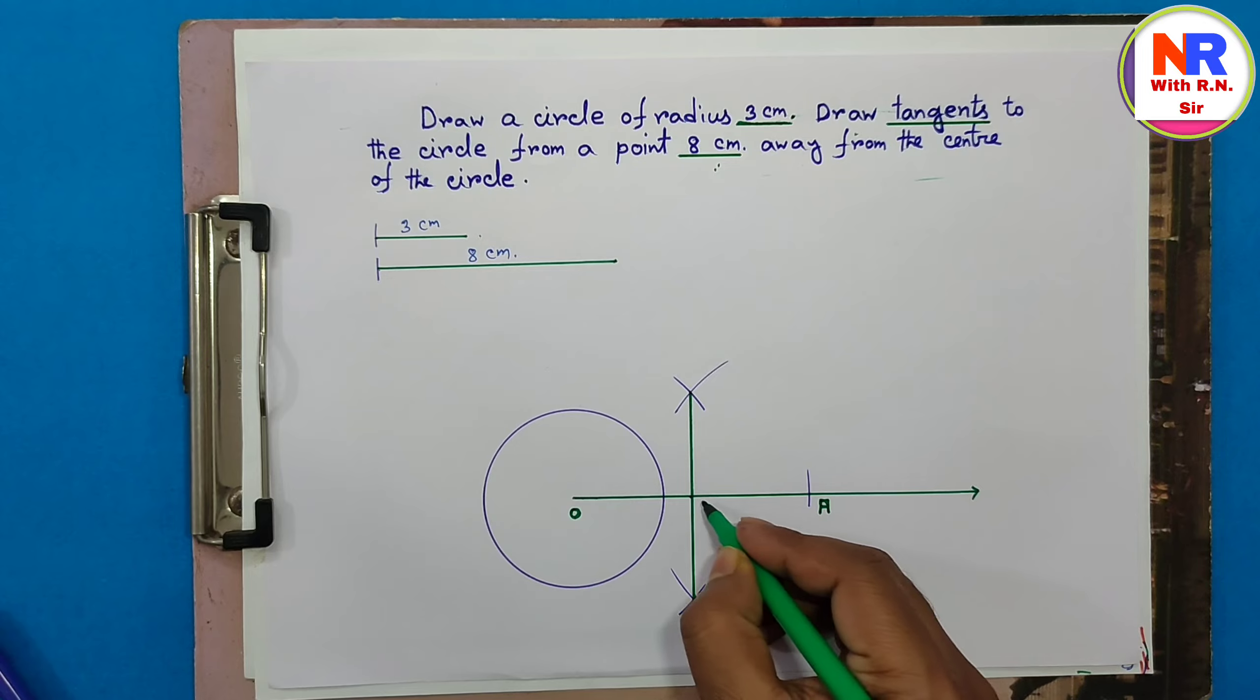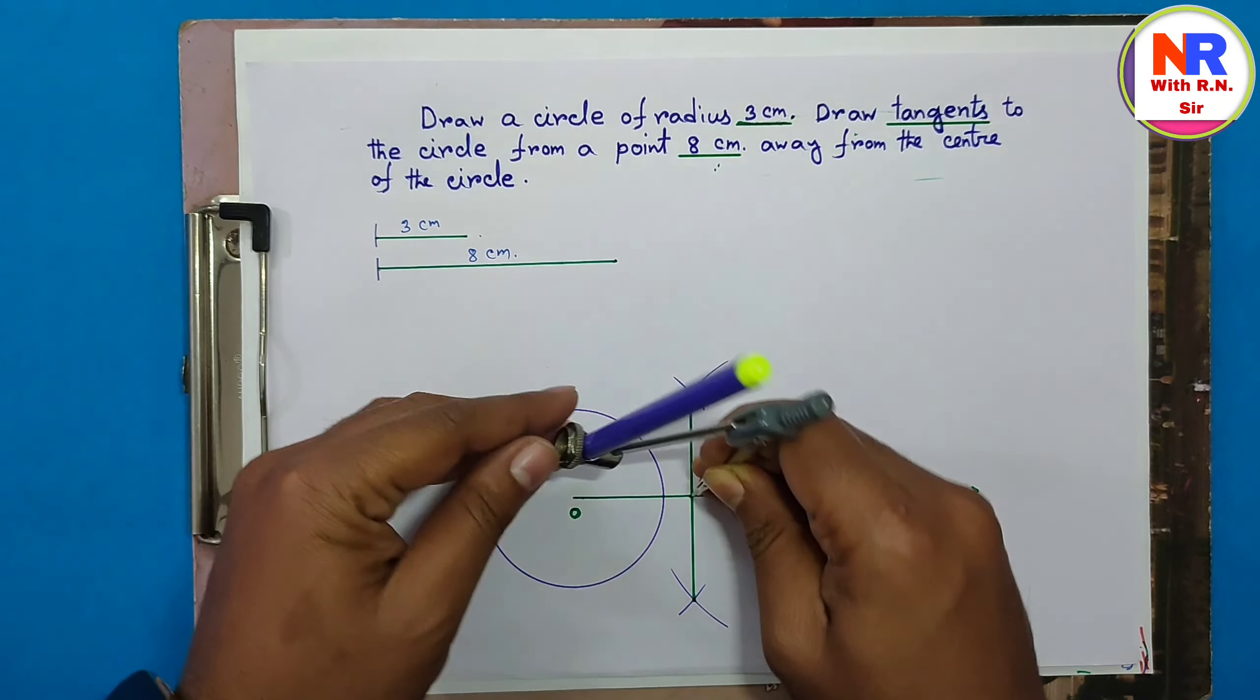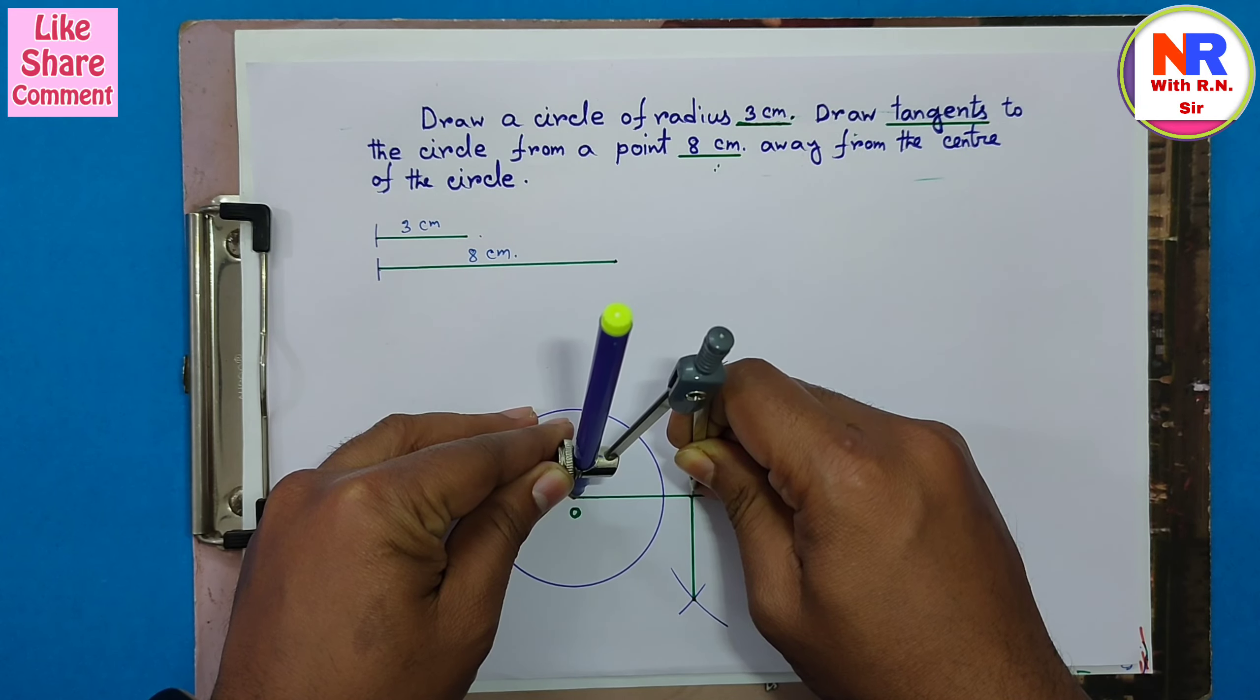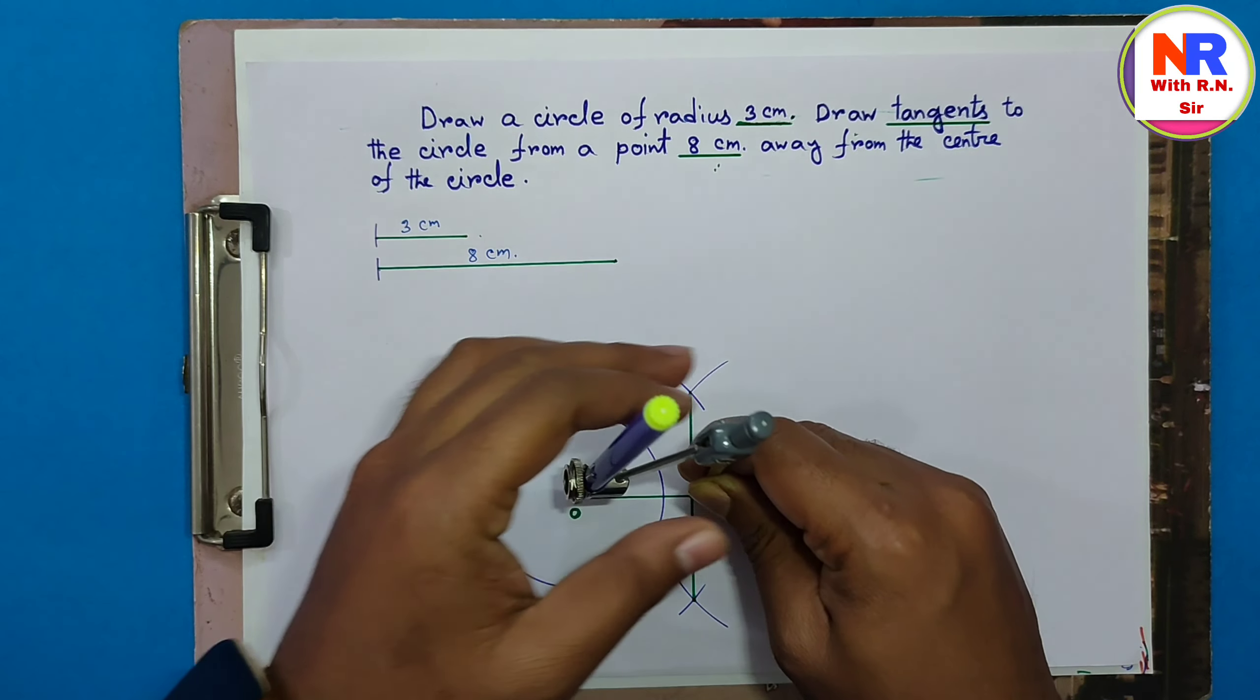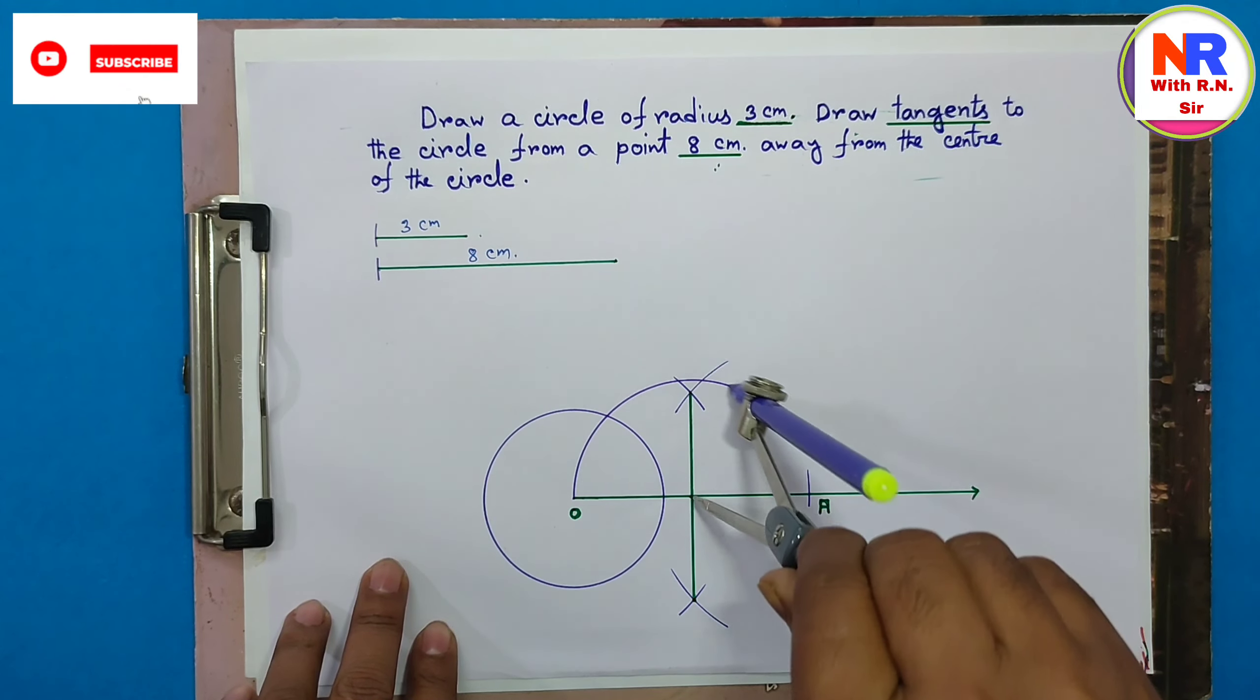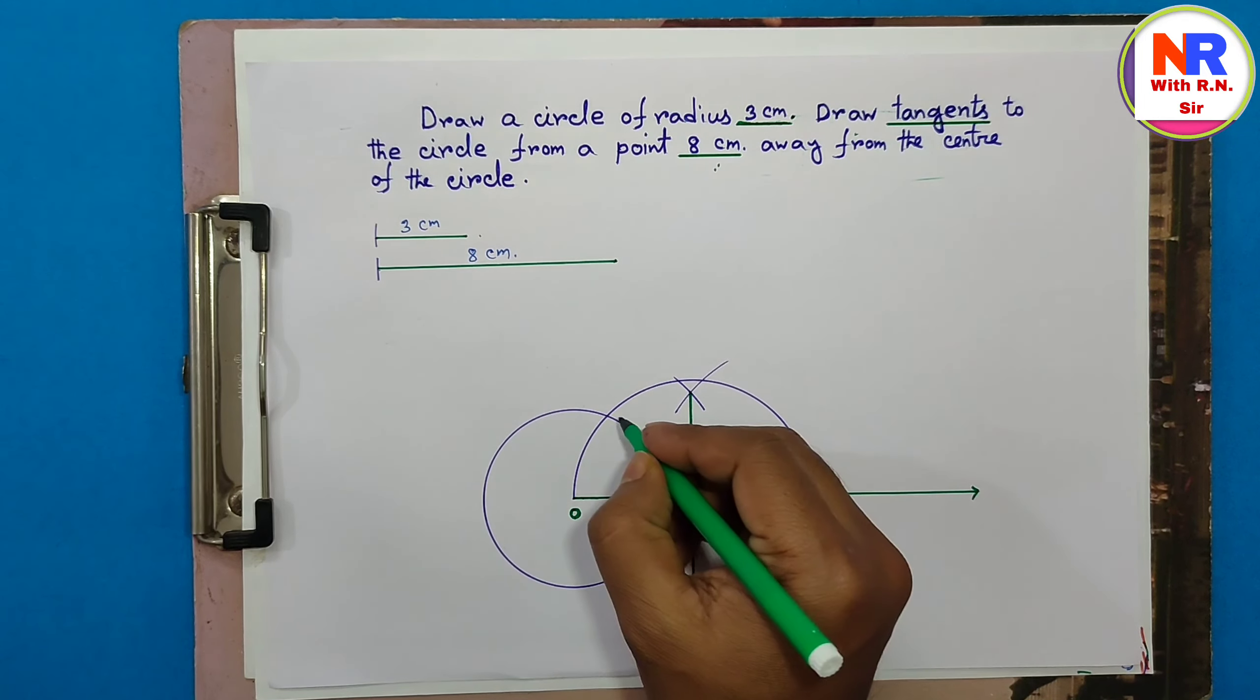So we are getting the intersecting point, this one. Now with the help of compass, take the measurement, and you can see this portion also matches. Now draw here the half circle.